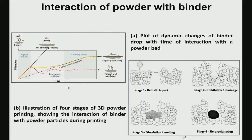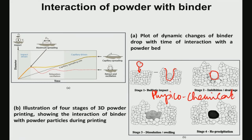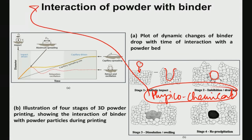Physico-chemical interaction is also essential: once the binder droplet contacts the powder bed, the powder must be wetted by the binder, and the binder must dissolve and chemically interact with the powder. This physico-chemical interaction enables more effective integration of the binder with the powder bed.